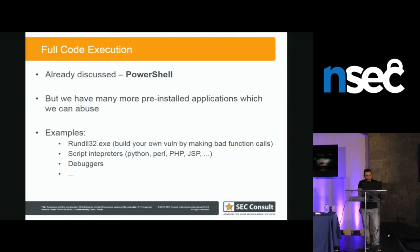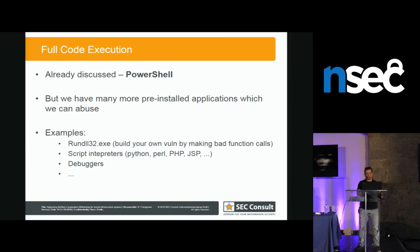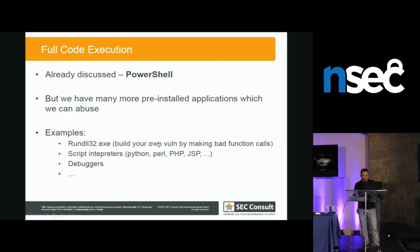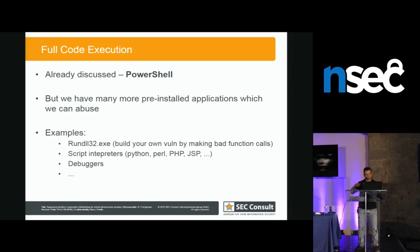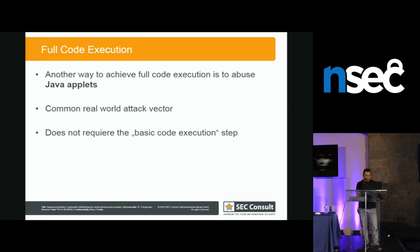Next step: full code execution. An administrator could remove PowerShell from the whitelist, but there are many more applications that work the same way. Script interpreters like Python or Perl are basically the same as PowerShell — you can start anything by passing arguments. Debuggers on the whitelist can write to the process space of a whitelisted application and inject shellcode. And there are many more.